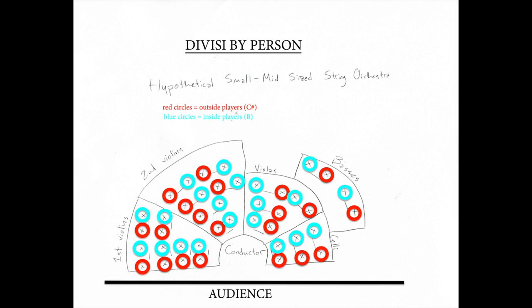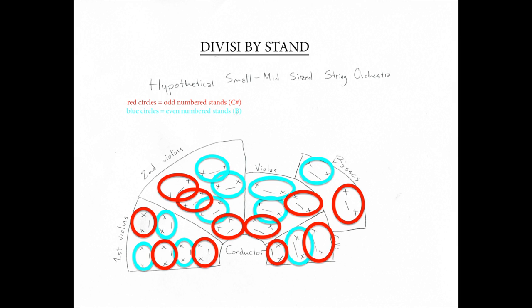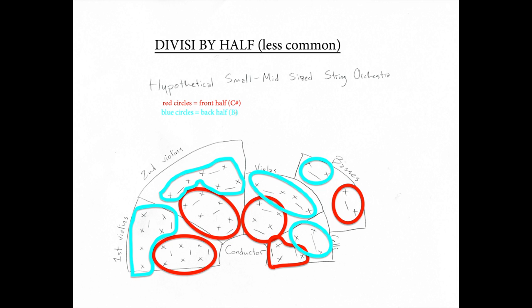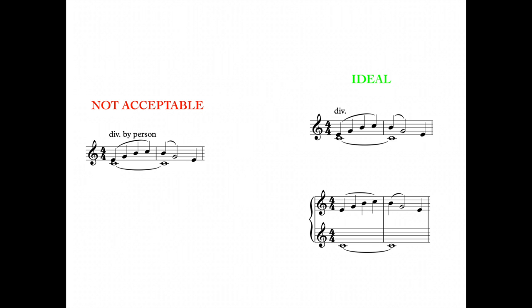So how is it decided who is going to do what? The two most common types of divisi are by person and by stand. Divisi by person means that the outside player of each stand — the person closer to the front of the stage — will play the top note, whereas the inside player will play the bottom note. Divisi by stand means that both players on the first stand will play the top note, both players on the second stand will play the bottom note, third the top, fourth the bottom, and so on. Another less common way is by front and back halves of the section. It's really important to note that if you are a composer, this is not your decision to make, and you don't need to micromanage what type of divisi is used. This decision is usually up to the principal player or the conductor, and it varies from orchestra to orchestra and can even vary from section to section in a single orchestra.